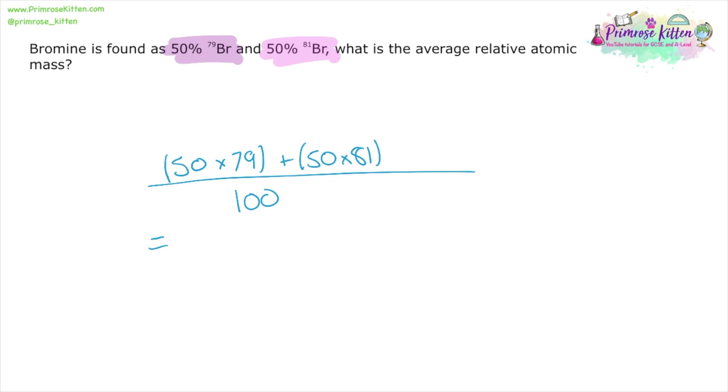So we can put that on the top: 50 times 79 plus 50 times 81, all over 100. It gives 8,000 over 100, which would give us an average of 80. And this is the value we see on the periodic table.